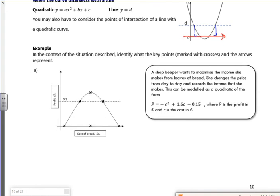Right, so let's have an example. That's going to be a curve line. I've done this question before. So in the context of the situation described, I identify what key points marked with crosses and the arrows. So a shopkeeper wants to maximise the income she makes from loaves of bread. She changes the price from one day to day, and records the income. So she's got this equation that p is minus c squared plus 1.6c minus 0.15. There.